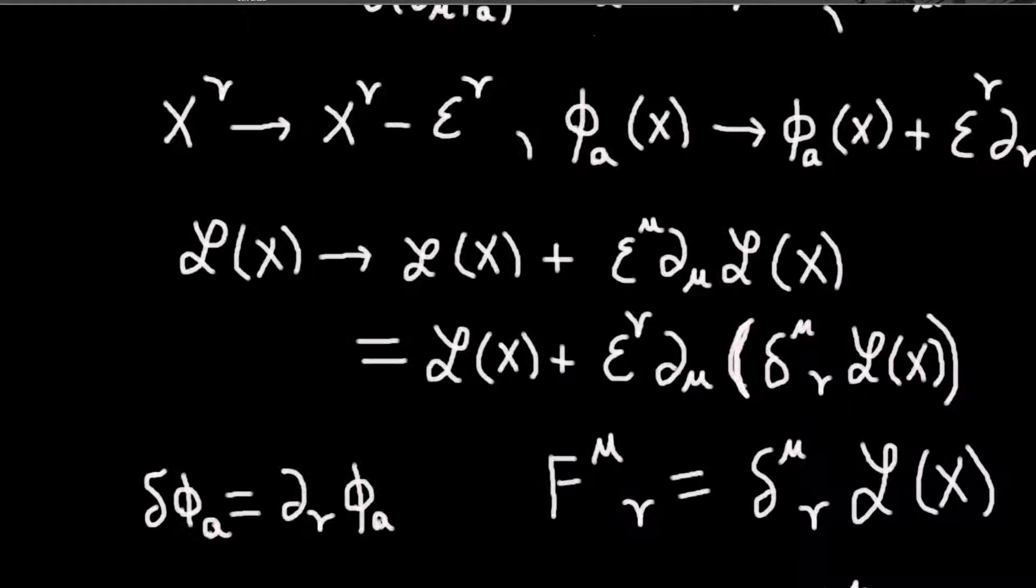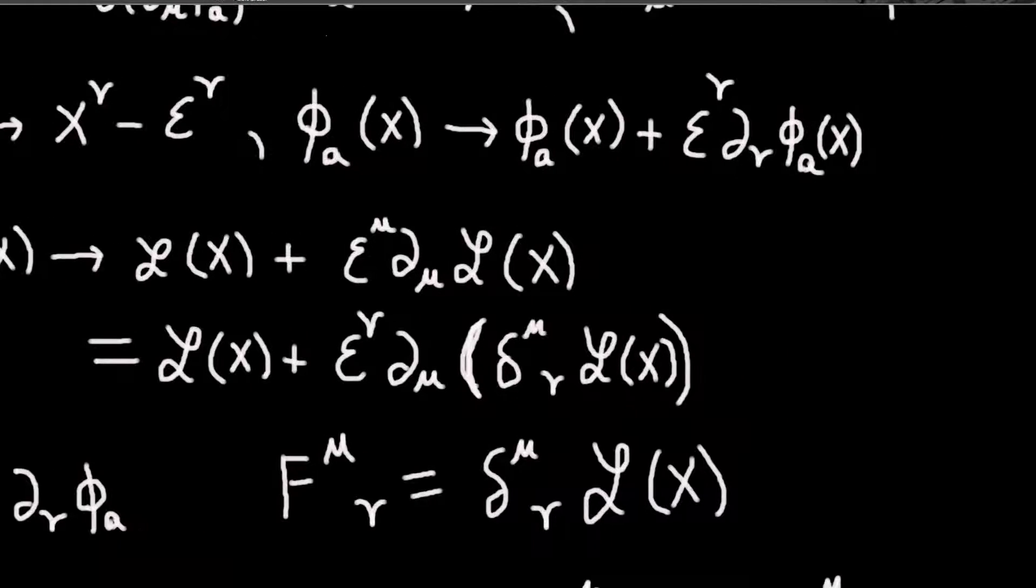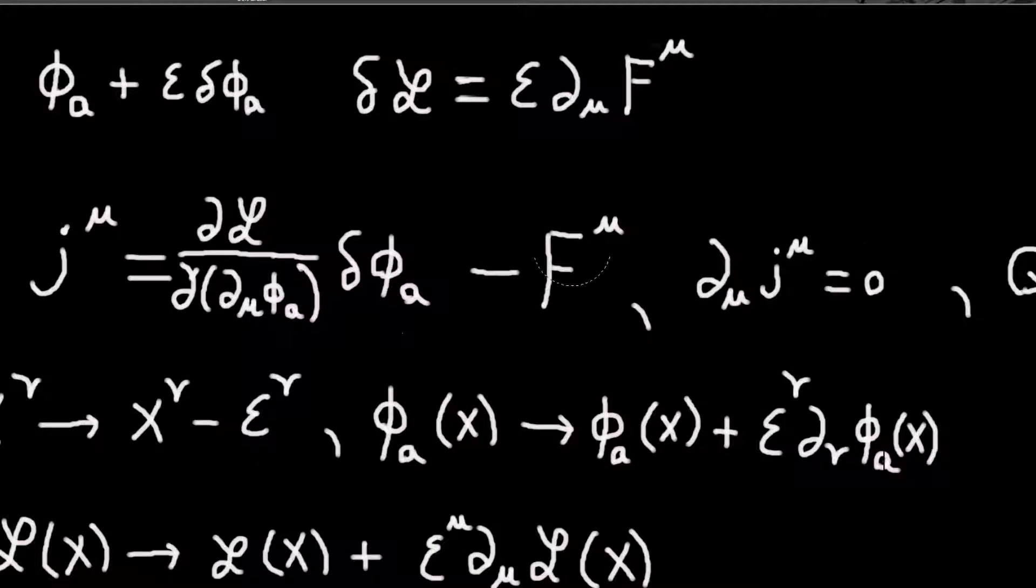So our variation to the field will just be... So we can see why I've written this parameter, this infinitesimal parameter here. So it's basically the variation in the field is just everything besides this parameter. So it will be d nu of phi, the ath field.